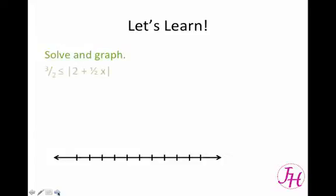Now, we're going to solve and graph 3 halves is less than or equal to the absolute value of 2 plus 1 half x. Now, this problem is a little bit different, because now we have our x on the left-hand side, and we're saying that this number is less than this.